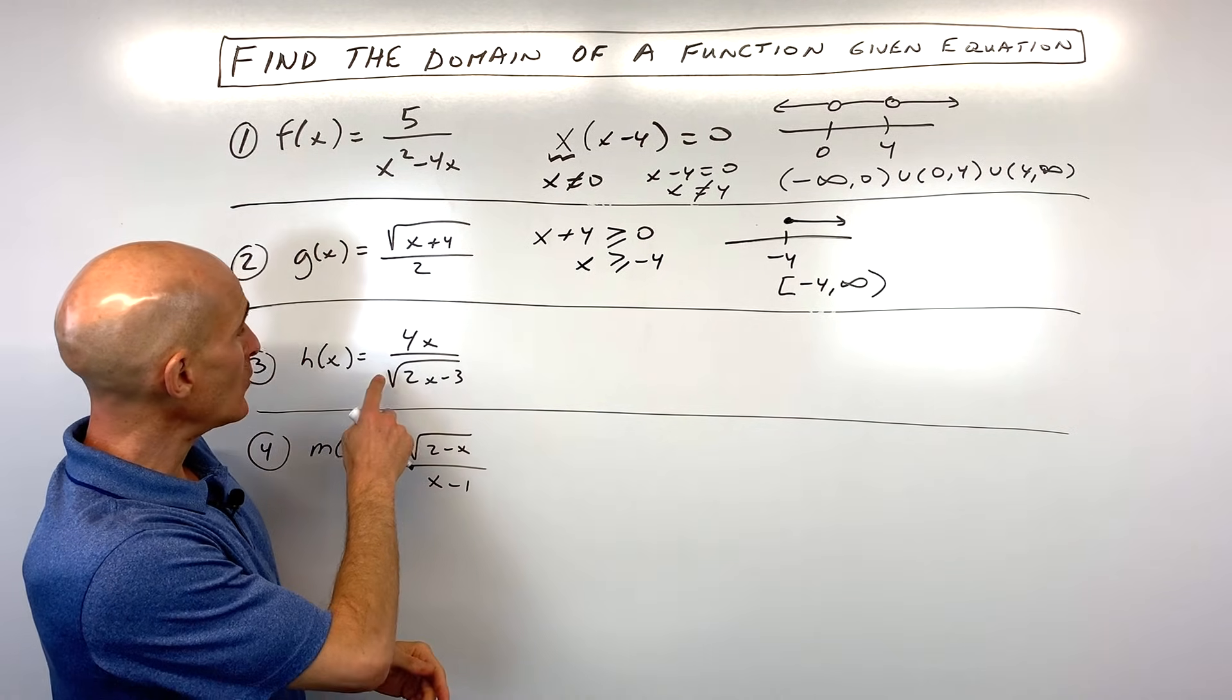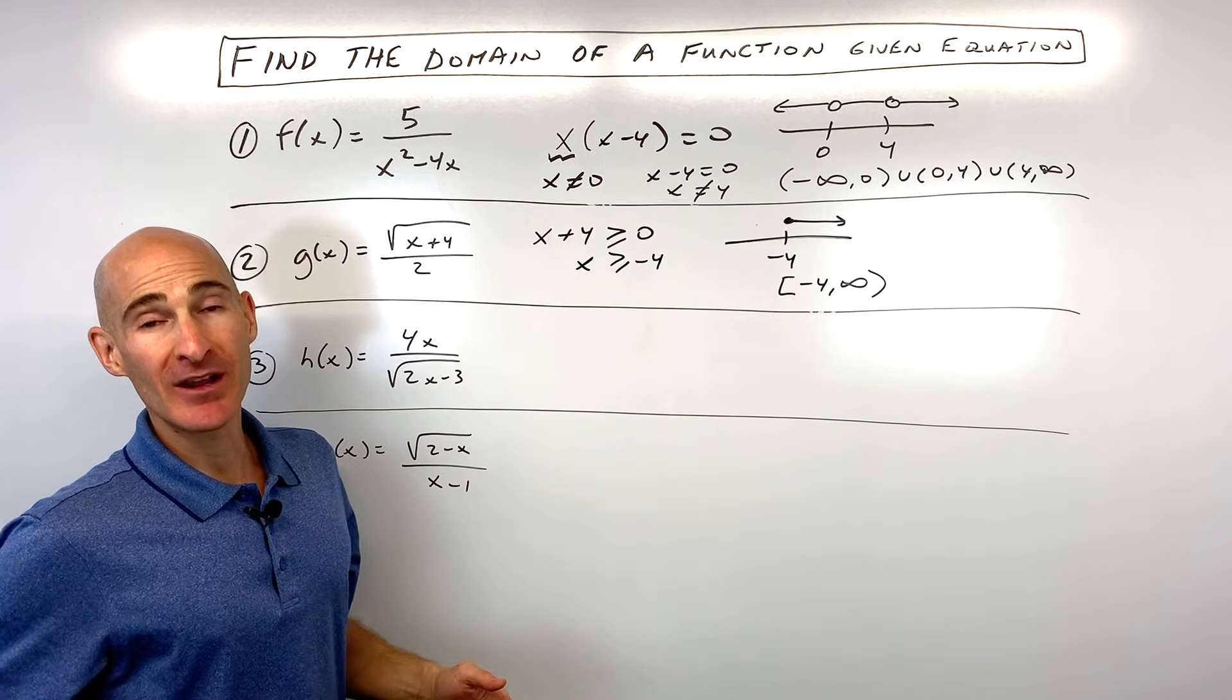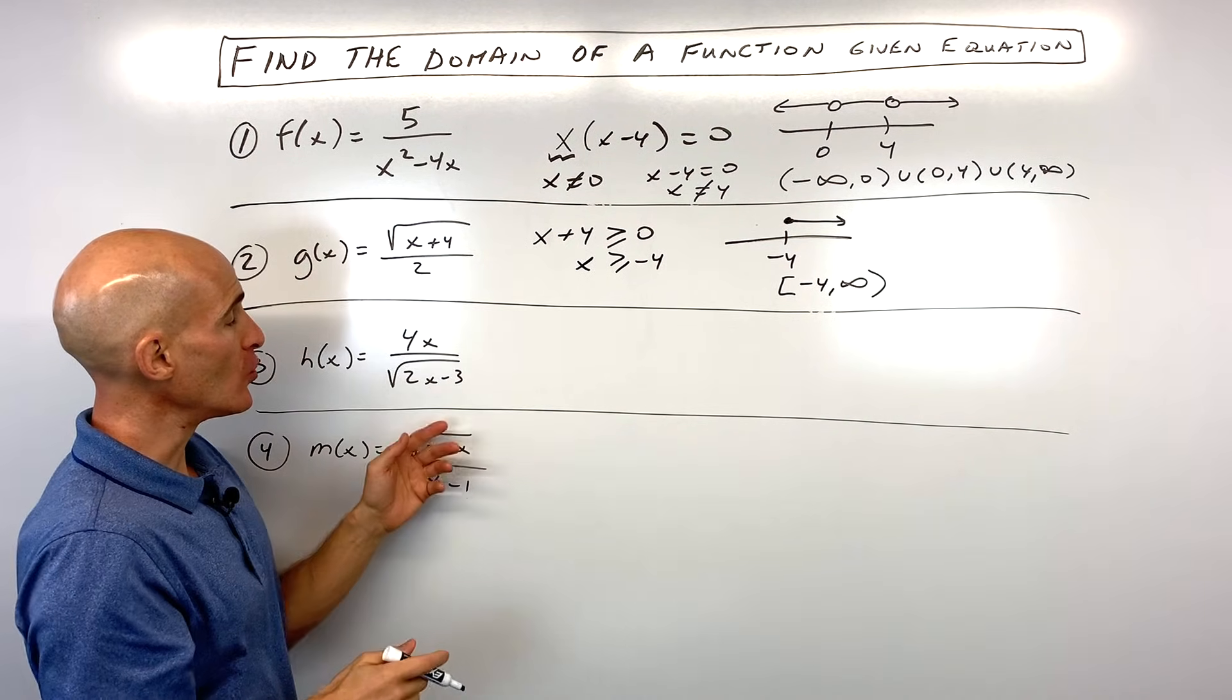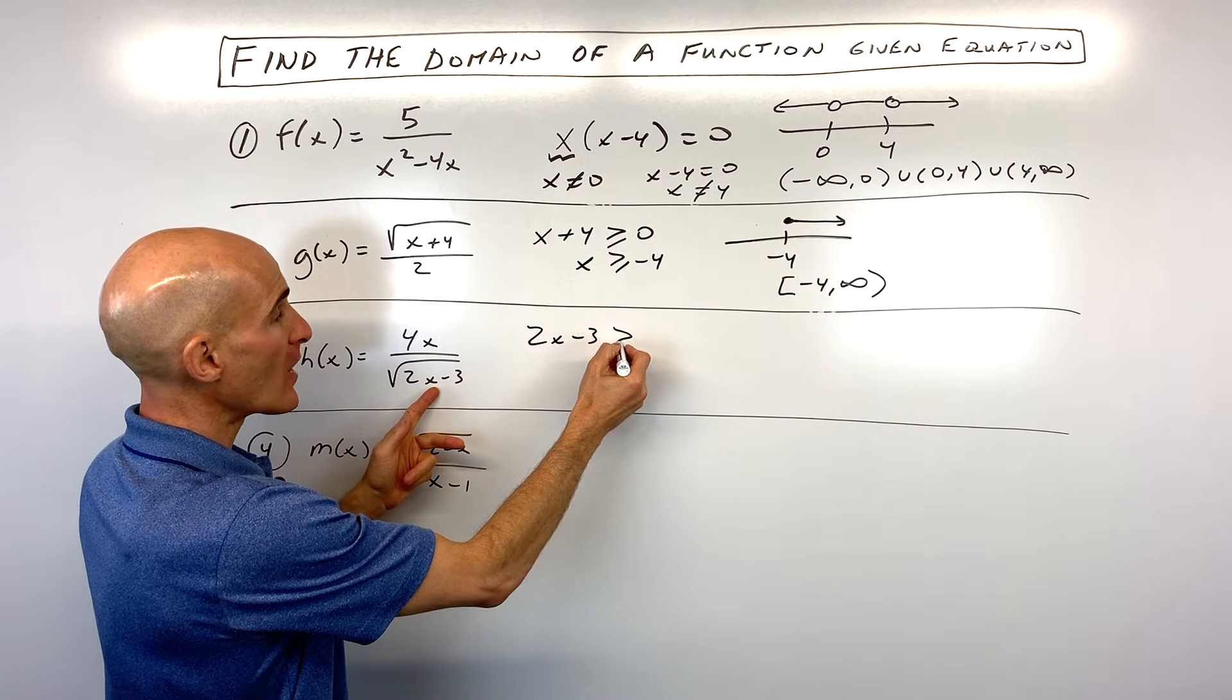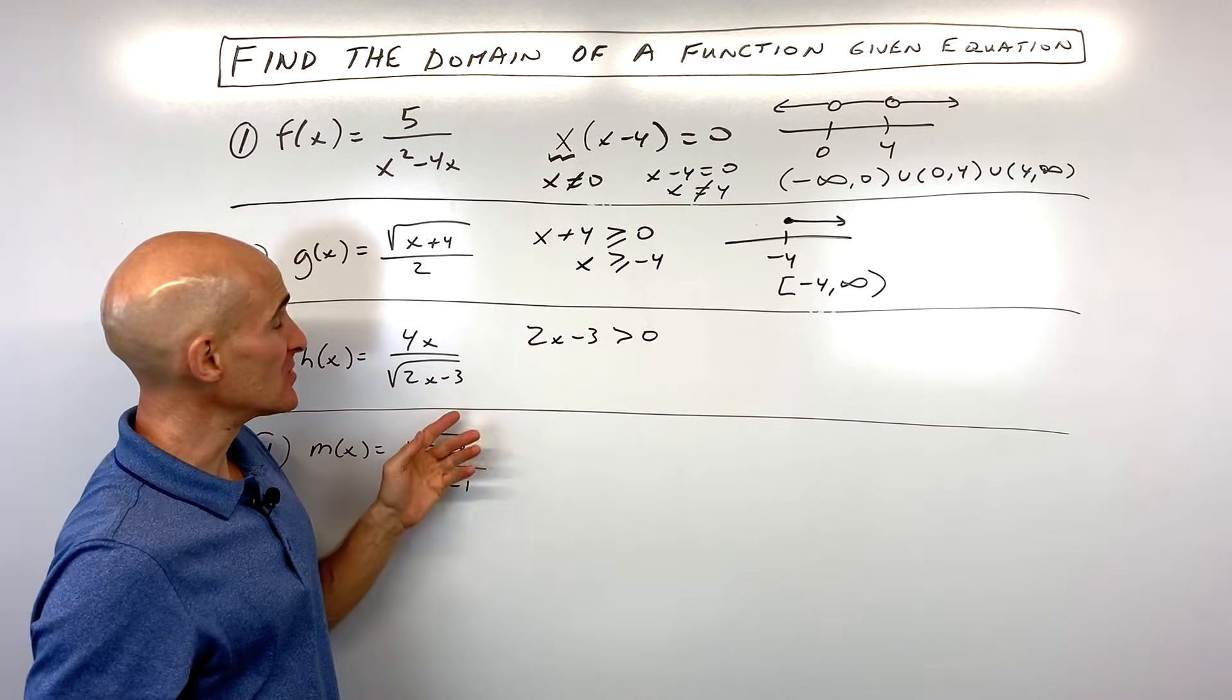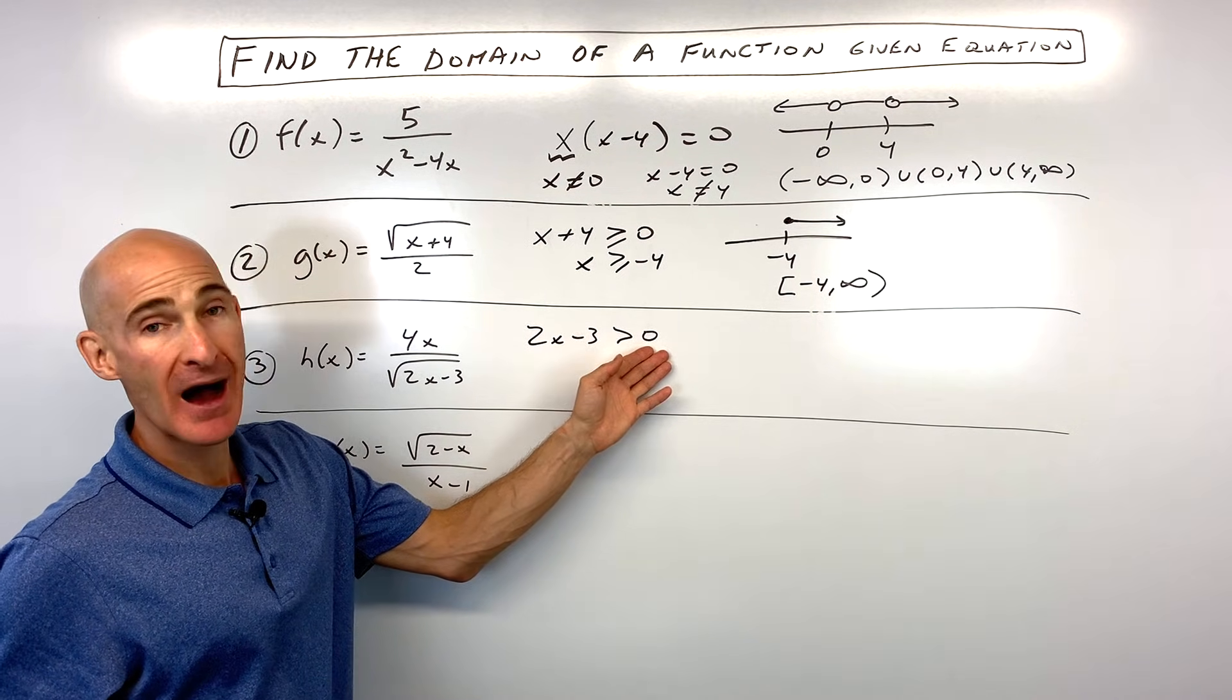For number three, you can see that we have a square root again, but it's in the denominator. So similar to number two, where we had to make an inequality, 2x minus three is greater than zero, but not equal to zero. Because it's in the denominator, we don't want to divide by zero. So it just has to be positive, but not zero.